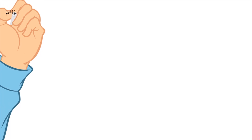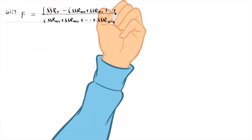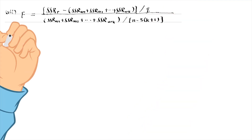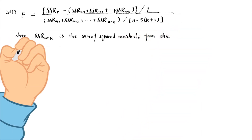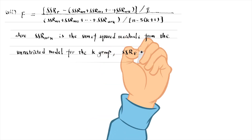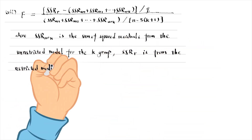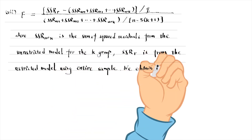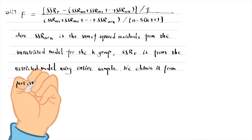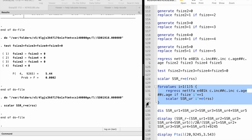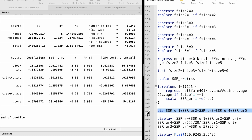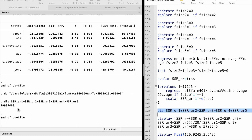We reject the null hypothesis in favour of the alternative that family size significantly affects financial assets. The last part is about the Chow test. The sum of squared residuals from the unrestricted model can be obtained from 5 separate regressions for the 5 family sizes. The restricted SSR is 30,215,207.5 and the unrestricted SSR is 29,985,400.